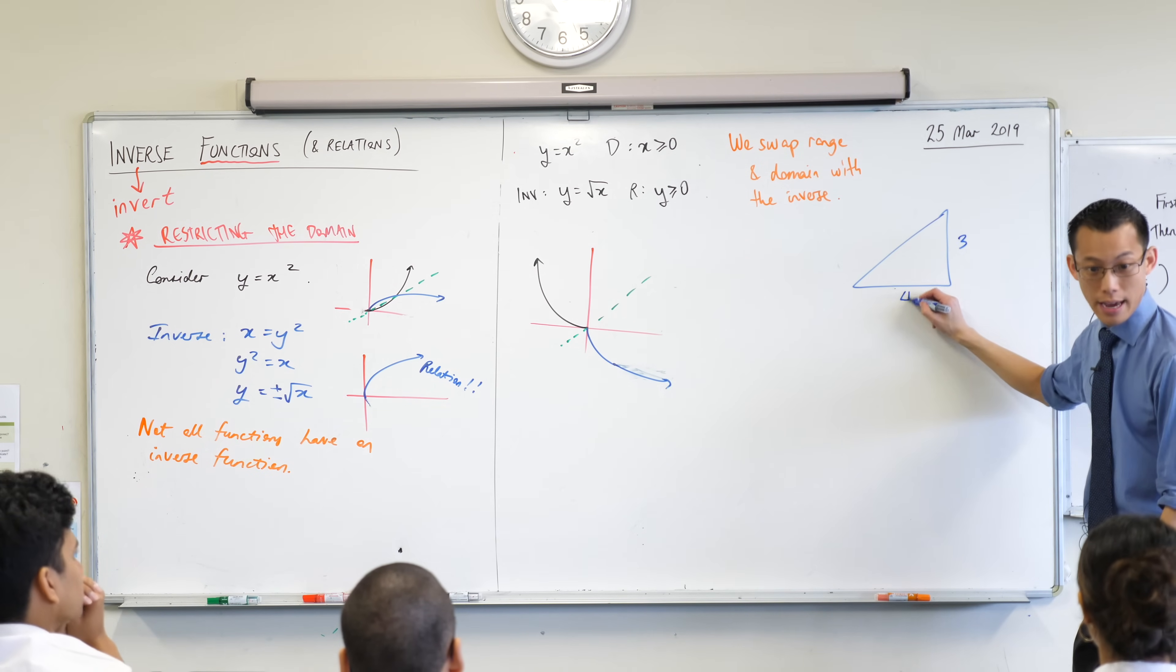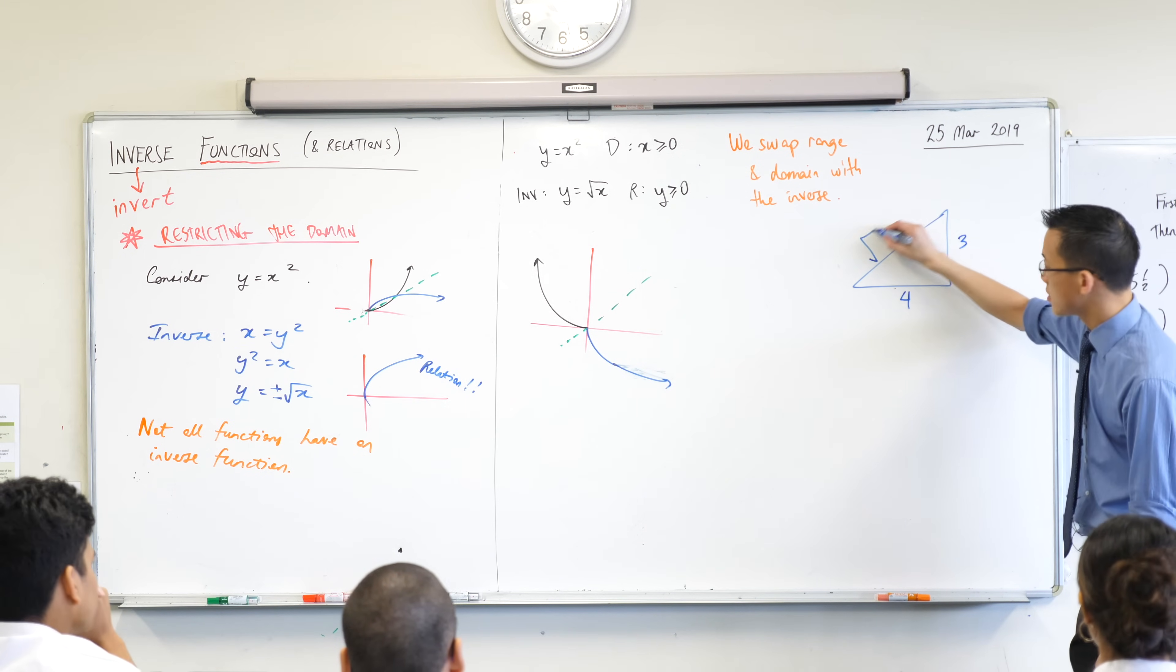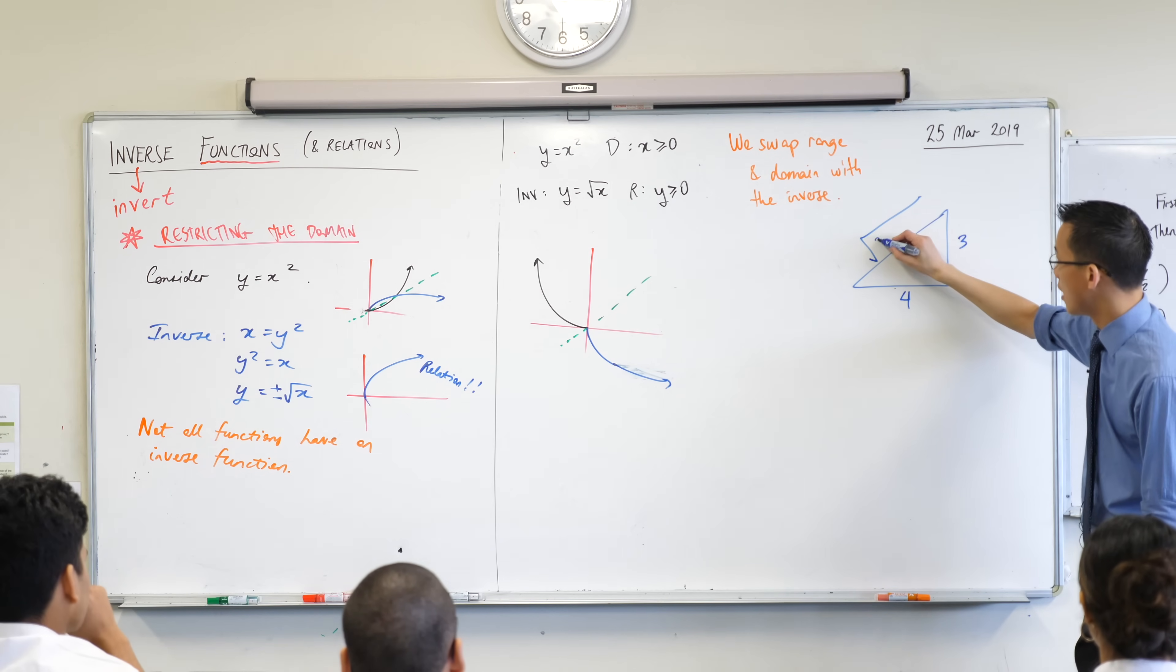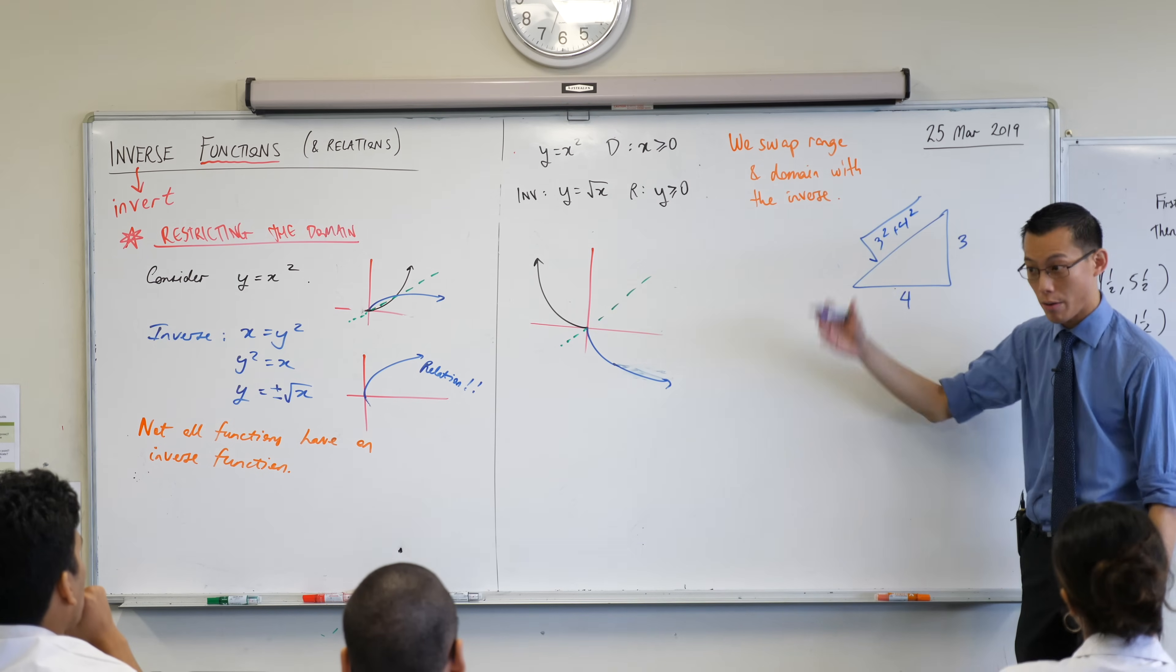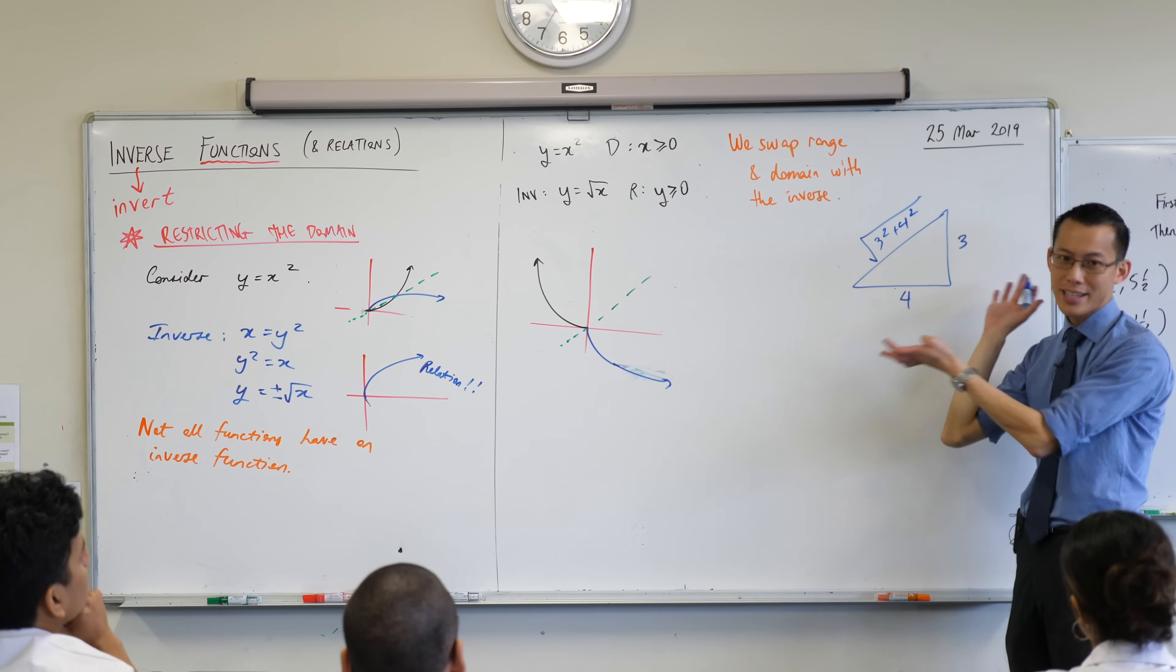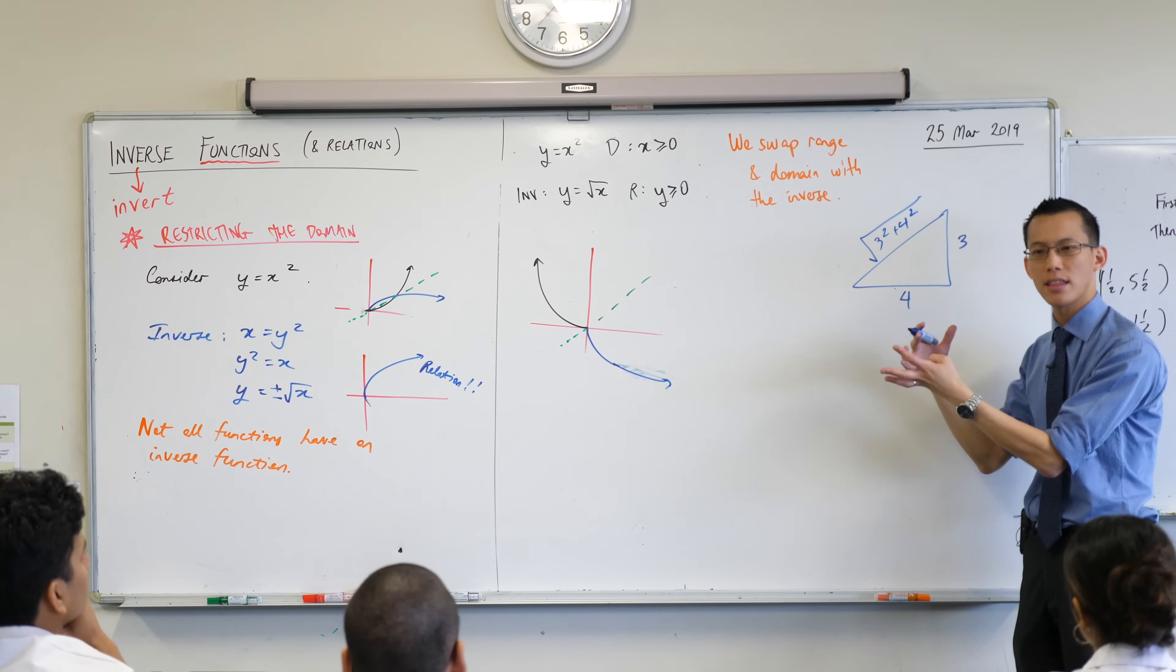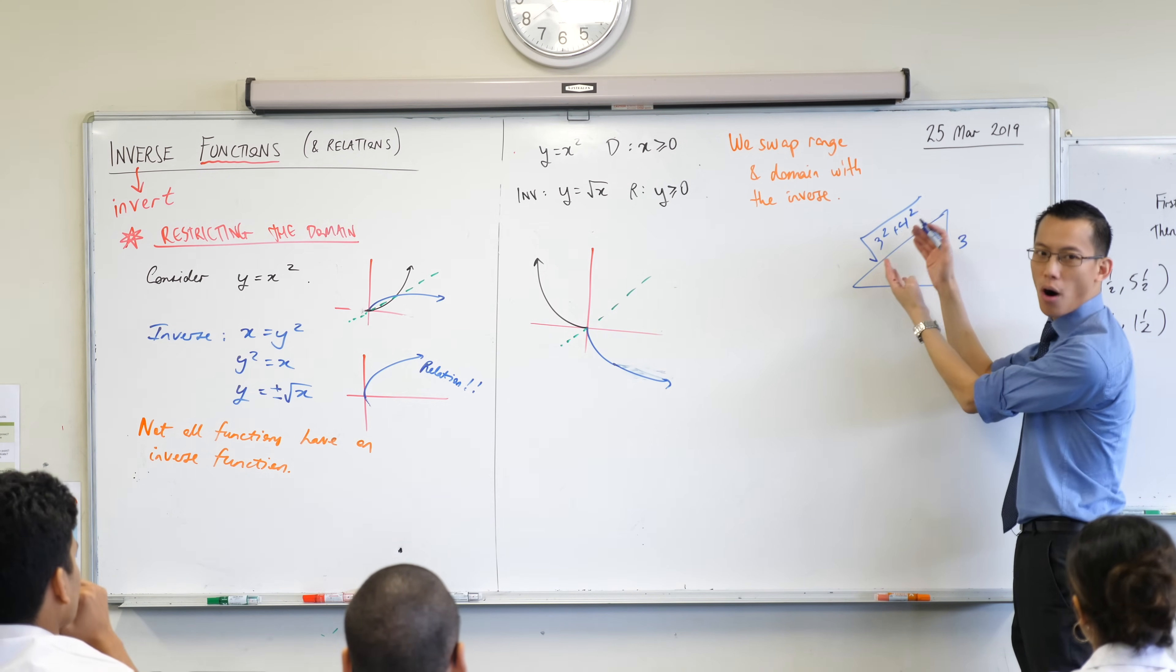Because you'd say, oh, if you know what this side is, and you know what this side is, then you'd say, this is the square root of this plus this. So, you're like, oh, I need to know what square roots are. But, in the context of measuring triangles, the only thing that makes sense is a positive value.